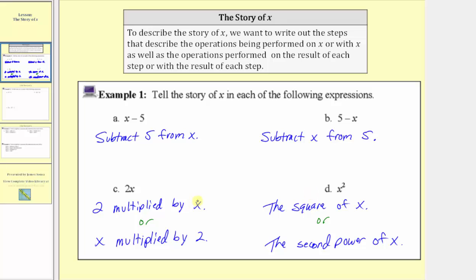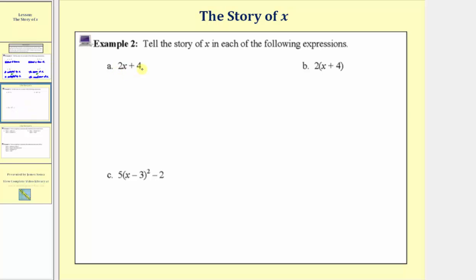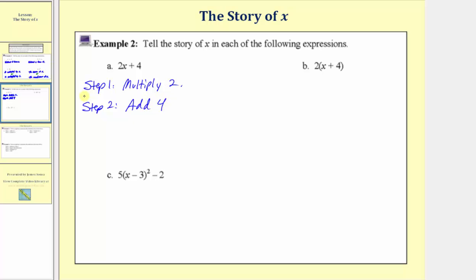Now we'll look at some expressions that have more than one operation. Our first expression is two x plus four. Following the order of operations, we know we multiply before we add. So to tell the story of x, step one is to multiply by two — we'll assume we're performing this operation on x. After we perform step one, we take the result and add four. So step two is: add four, assuming we're doing this to the result of step one.